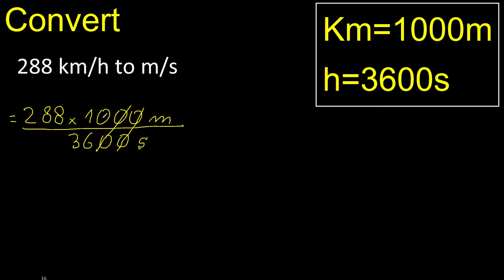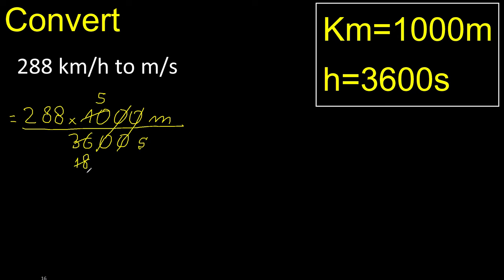This can be simplified because it can be divided by the same number. Divided by 2 — then divided by 2 is 5. 36 divided by 2 is 18. This can be divided by 2 — divided by 2 is 9. Divided by 2.